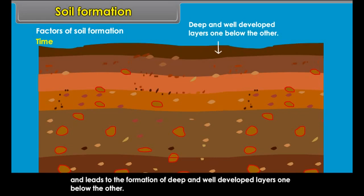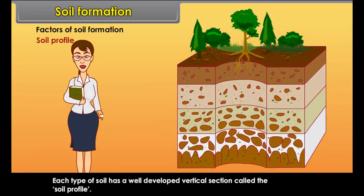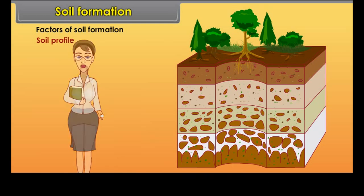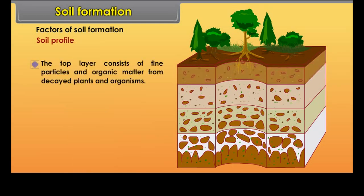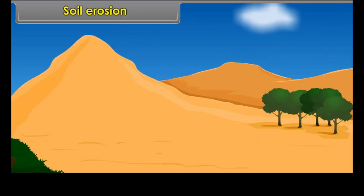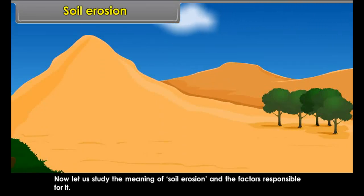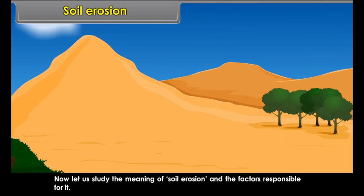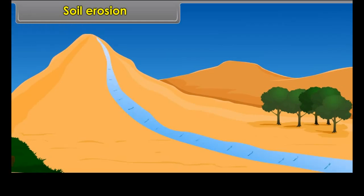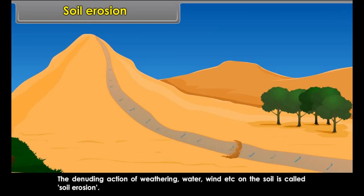A rich and fertile soil is formed only when the weathered particles of rocks remain undisturbed at one place for a long time. It is only over a long span of time that the action of physical, chemical and organic processes leads to the formation of deep and well-developed layers one below the other. Each type of soil has a well-developed vertical section called the soil profile.